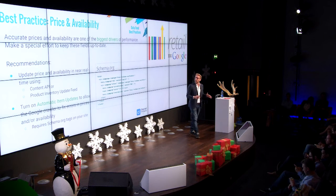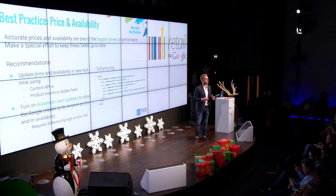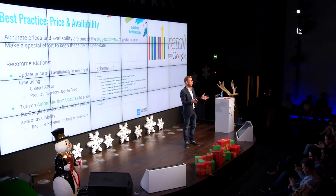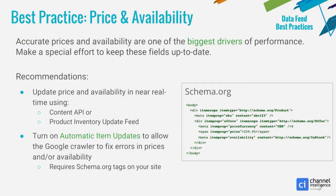Price and availability, and having those accurate in your feed, is one of the biggest drivers of performance with Google Shopping and PLAs. Google is super strict on price and availability. If Google's crawlers find a discrepancy between what's in your feed and what's on your landing page, those items will get disapproved straight away. And if this is happening consistently, your account's going to get suspended. The second reason is obvious: it's a user experience issue. If you see a PLA, decide you'd like to buy it, and click on it, only to find on the landing page that it's either out of stock or more expensive than you're expecting — that's not going to be a good user experience.